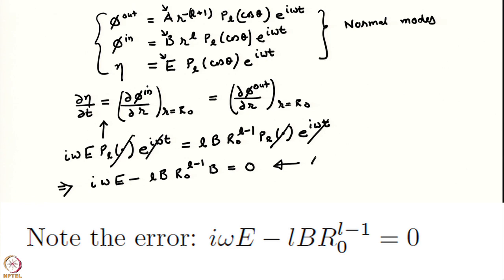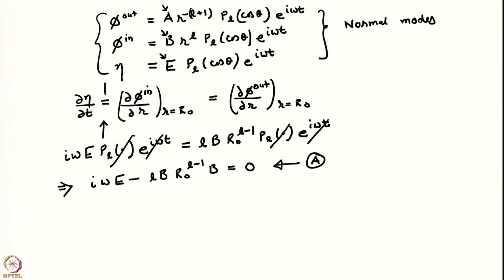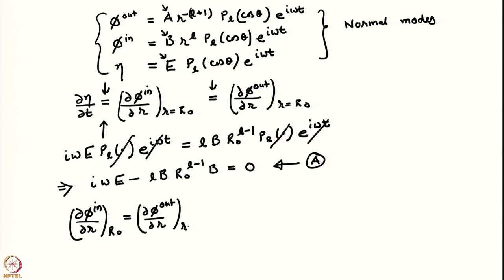Let us call this equation A, where we have utilized this equality. Now let us utilize the second equality. I want to set d(phi_in)/dR at R_0 to be equal to d(phi_out)/dR at R_0, where small r is equal to R_0. I have to use those expressions for phi_in and phi_out and take the derivatives.